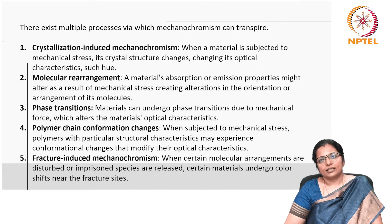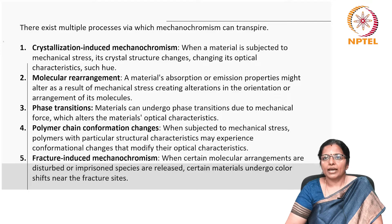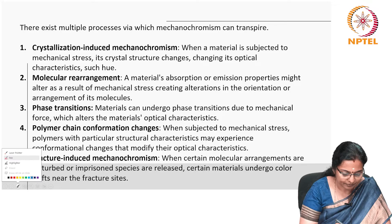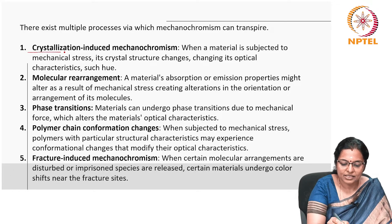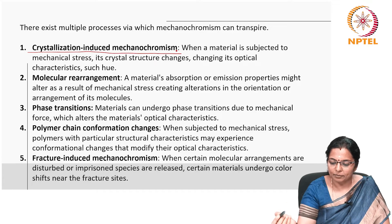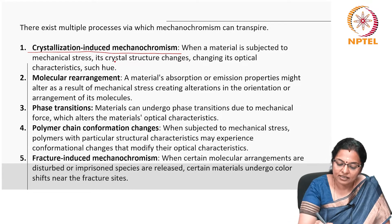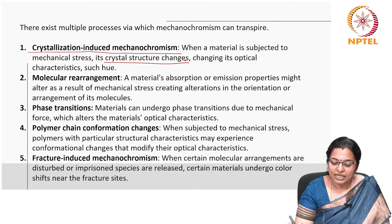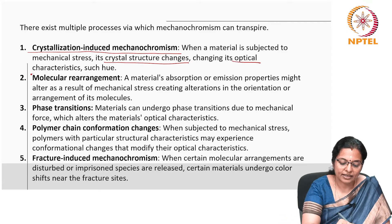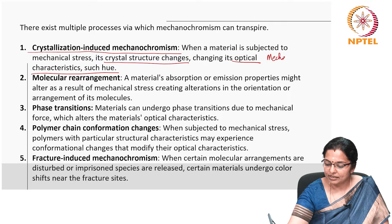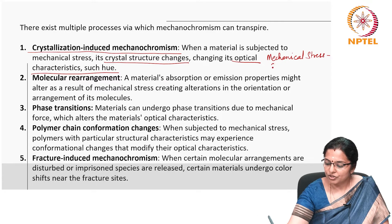There exist multiple processes through which mechanochromics can happen. The first is crystallization-induced mechanochromism: when a material is subjected to mechanical stress, its crystal structure changes, altering its optical characteristics — that is, its hue.